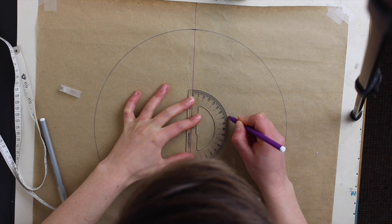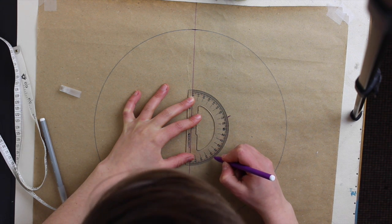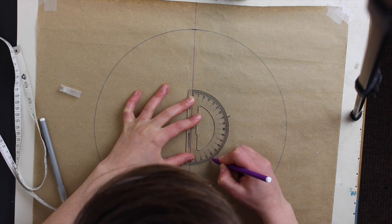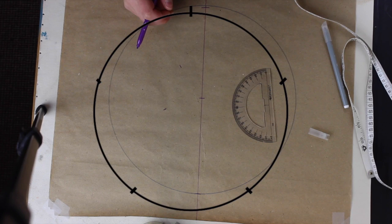And to find the other one, you're going to add 72 plus 72. That's going to give you 144 and that's your other mark. And that's the markings that you should end up with.